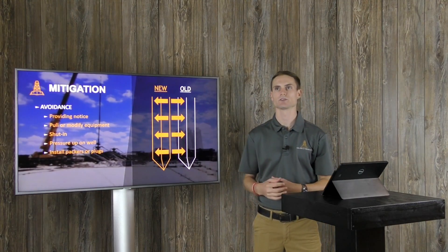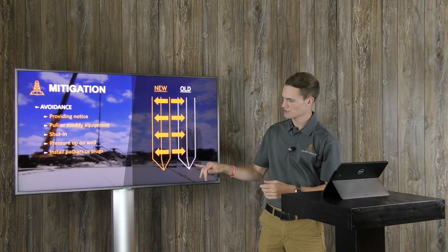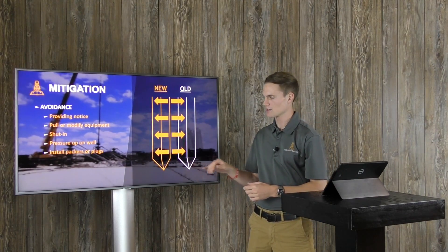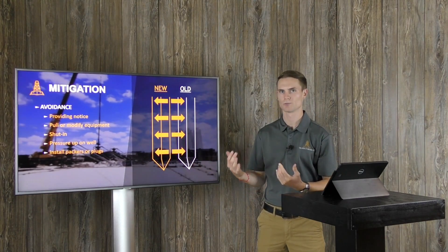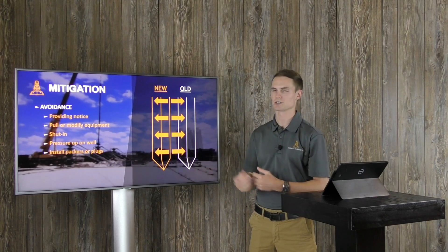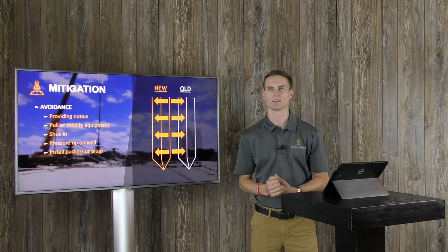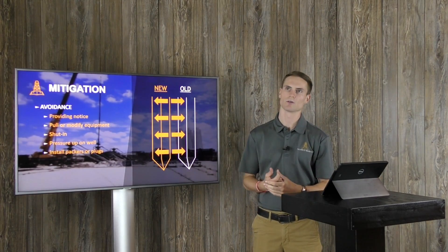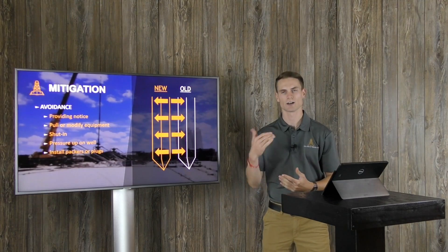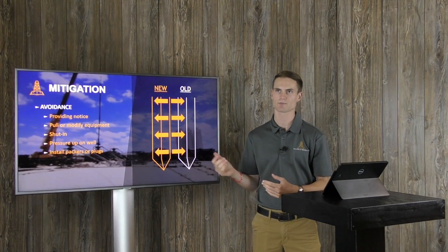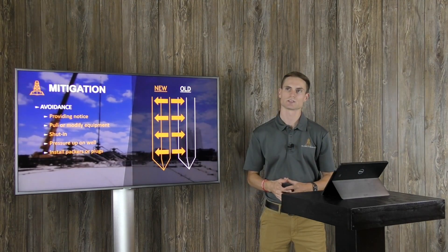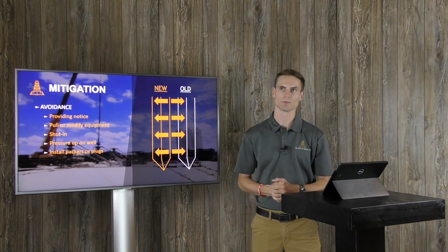Also modify equipment, so you want to make sure that the pressure rated equipment on the offset wells can handle the potential of the pressures that you might see from this frack hit. This is especially important when you're around vertical wells that are around the same formation depths. You want to make sure that those can withstand the pressure of an oncoming frack hit.